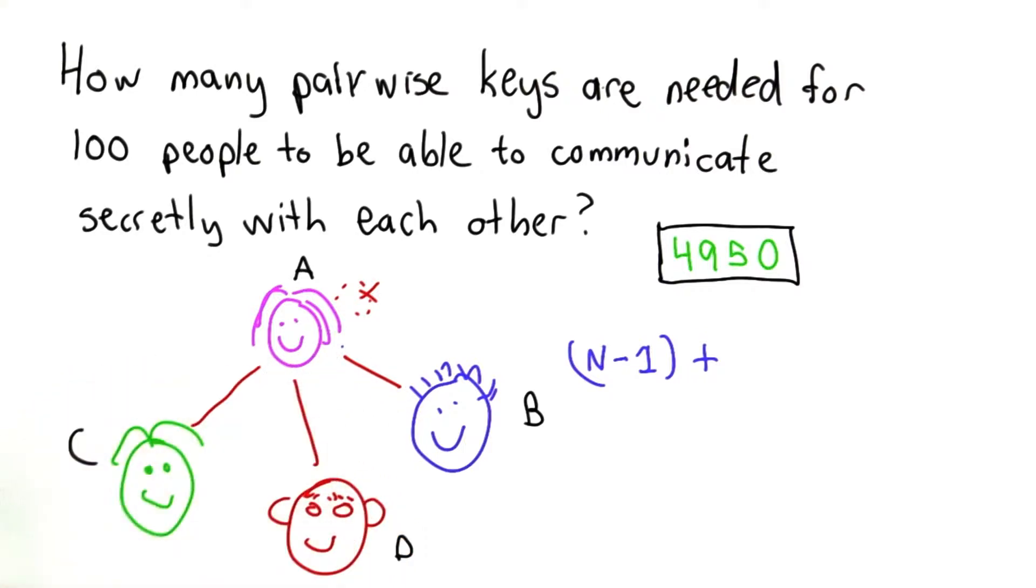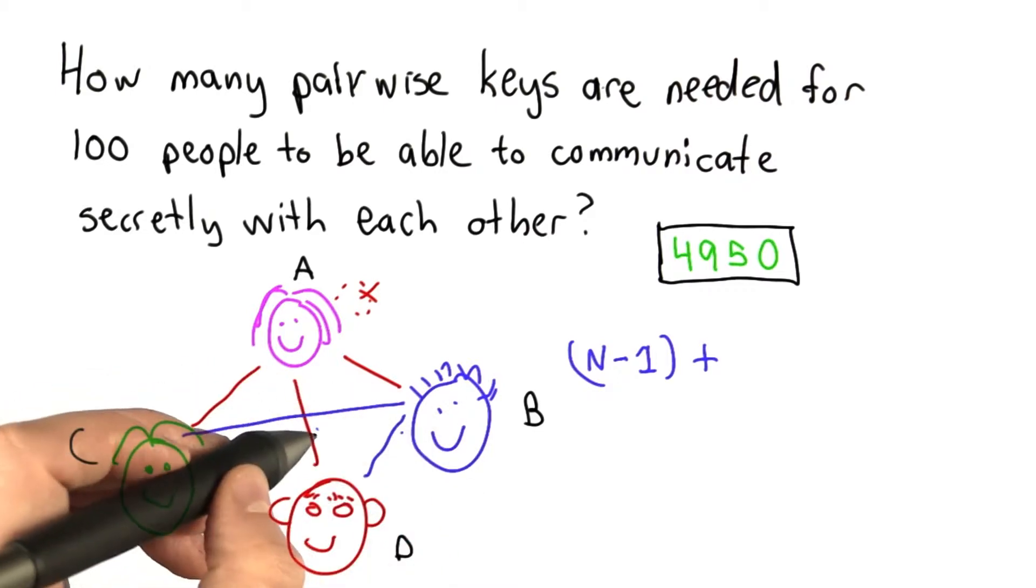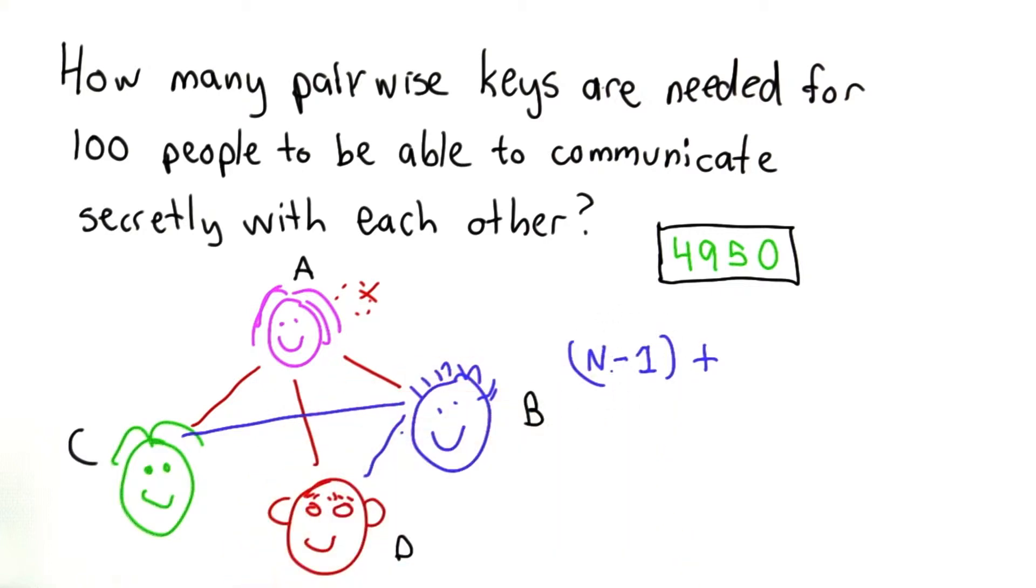Bob already has a pairwise key with Alice. He needs one with Charlie and he needs one with Doug. So Bob needs two pairwise keys, which is n minus 1, minus 1, since he already has one with Alice, and he doesn't need one with himself.